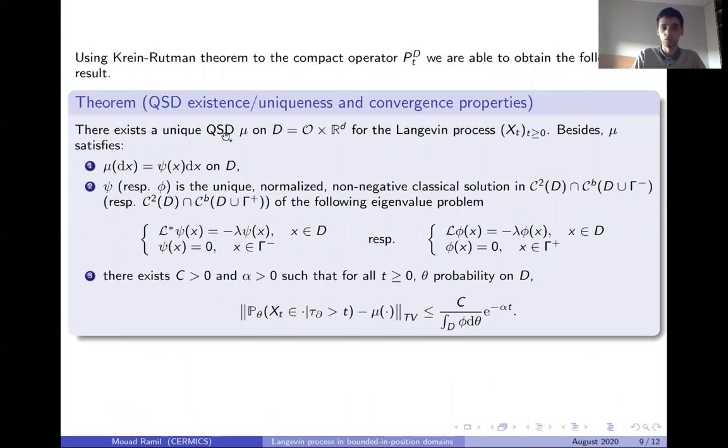The convergence is exponential in time and with speed and pre-factor here independent of the initial distribution. Here, this is the law of the process conditioned to remain in the domain, and this is the QSD. We are using Krein-Rutman theorem to be able to extend this work to the Langevin process. We are able to do so and prove the existence of a unique QSD mu on the domain D, O times Rd, for the Langevin process. It satisfies these two properties: it admits a density with respect to the Lebesgue measure, and it's the unique solution to an eigenvalue problem.